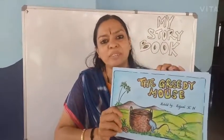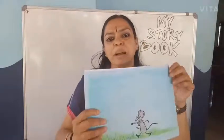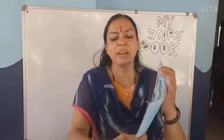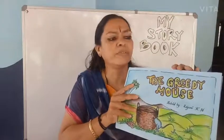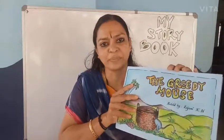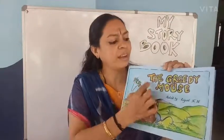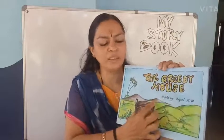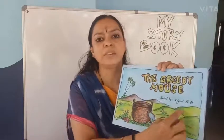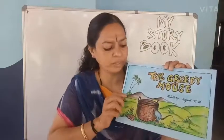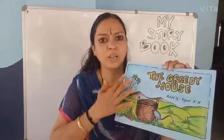Children, at last our story book is ready. We bind the book with a front cover and back cover. Use chart paper for the cover page. Write the title of the story and the name of the author, and draw pictures.